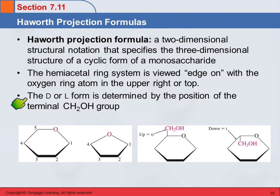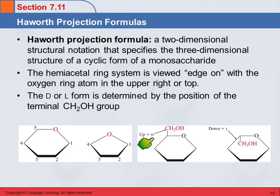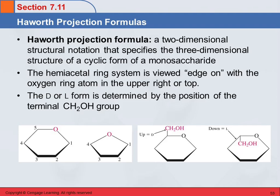D or L form has to do with that terminal CH2OH group and the chirality at the last carbon. For a six-membered ring, if it's the D isomer, this group will be sticking up. If it's the L isomer, that group will be going down. Unfortunately, it would be great if D was down — D for down — but it isn't that way. Almost all of the ones we're going to be looking at are the D isomers, because that's what's mostly found physiologically. It's almost always going to be up. If you see it down, that means it's the L isomer.